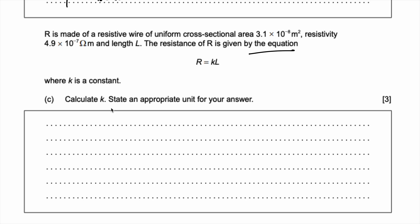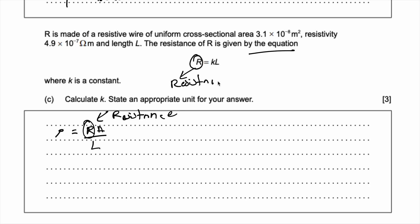From the data booklet, the resistivity formula is ρ = RA/L, so solving for R gives R = ρL/A. We also know that R = kL. Since both expressions equal R, I can set ρL/A = kL, and the L's cancel out, so k = ρ/A.